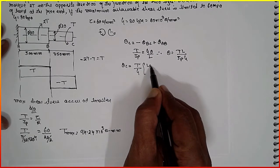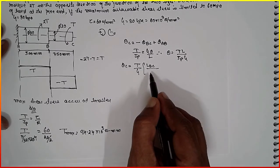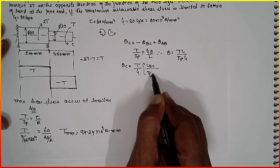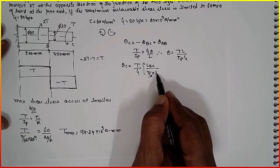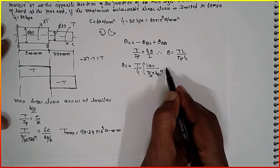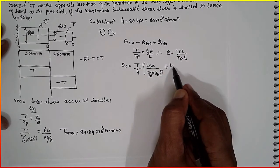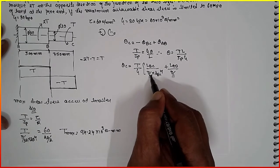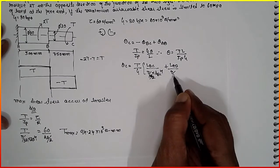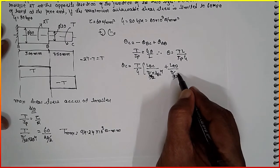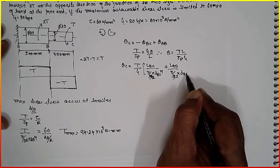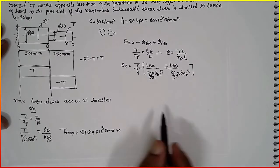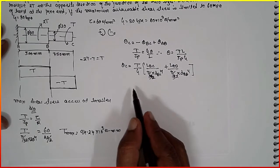Next, LBC divided by pi by 32 into DBC raised to 4, plus LAB divided by pi by 32 into DAB raised to 4.